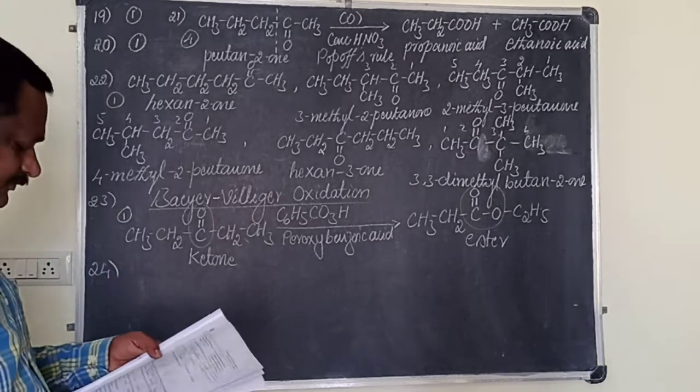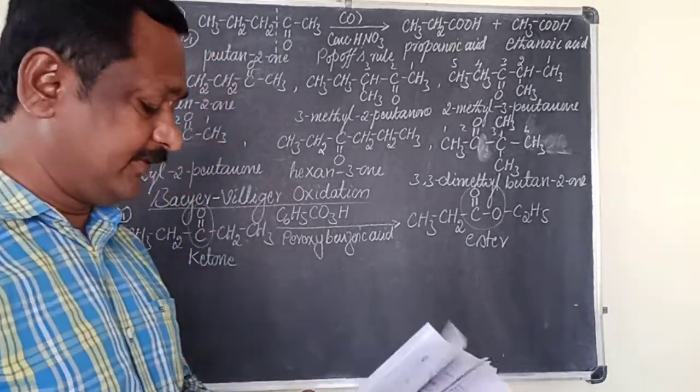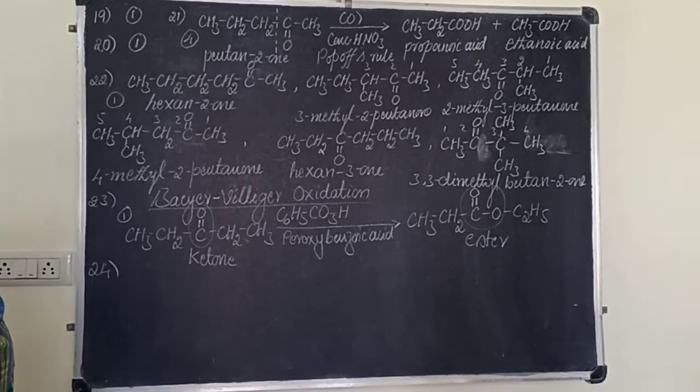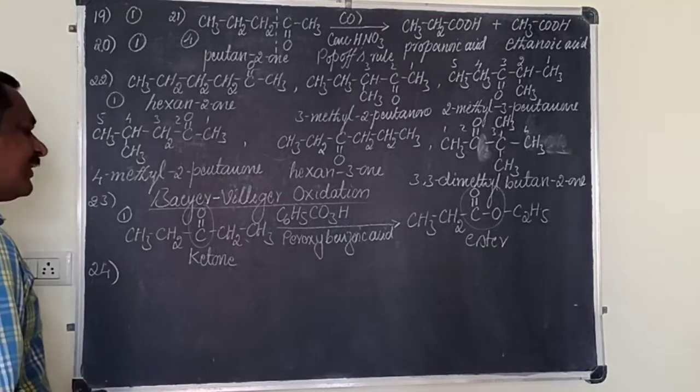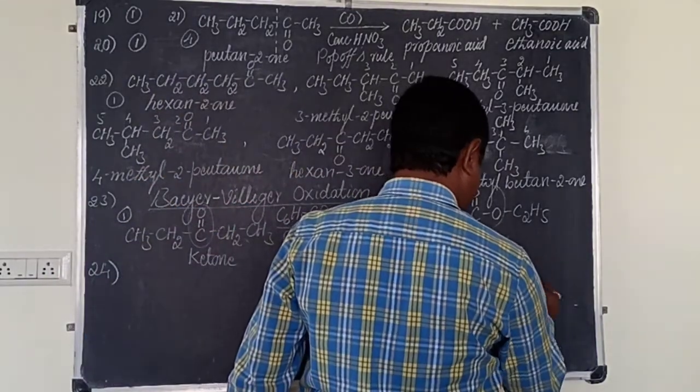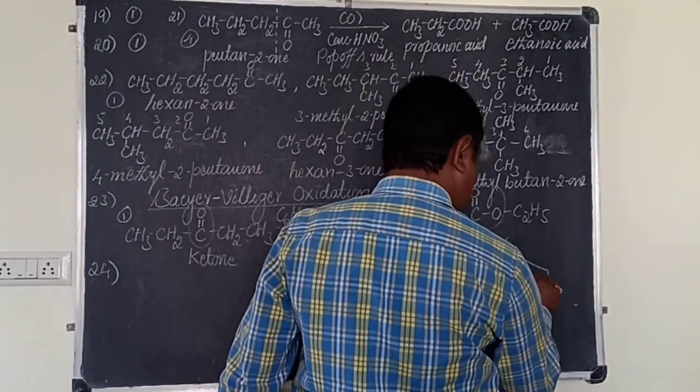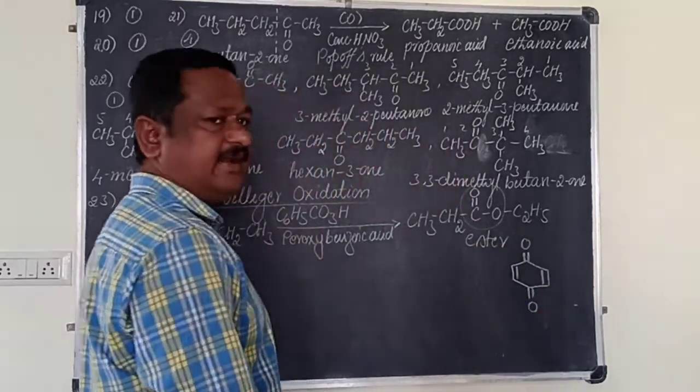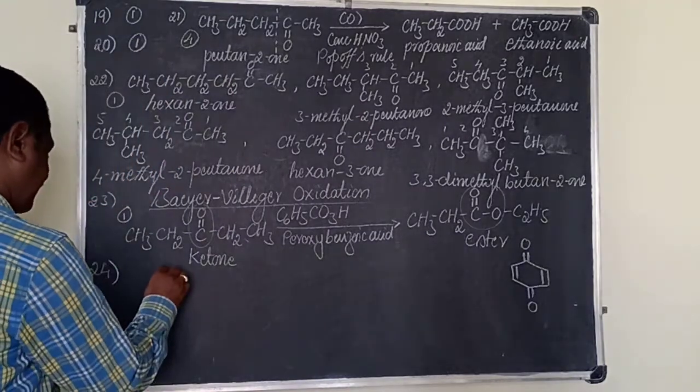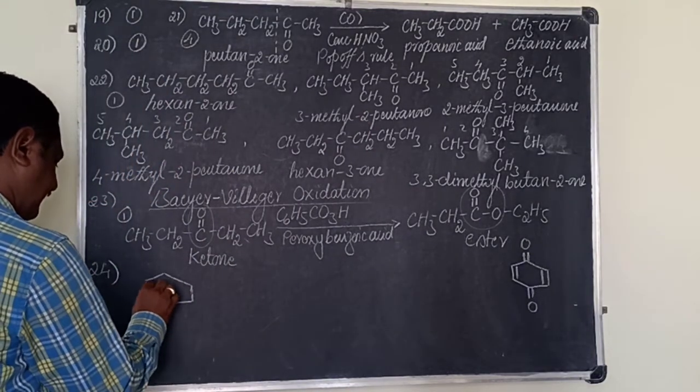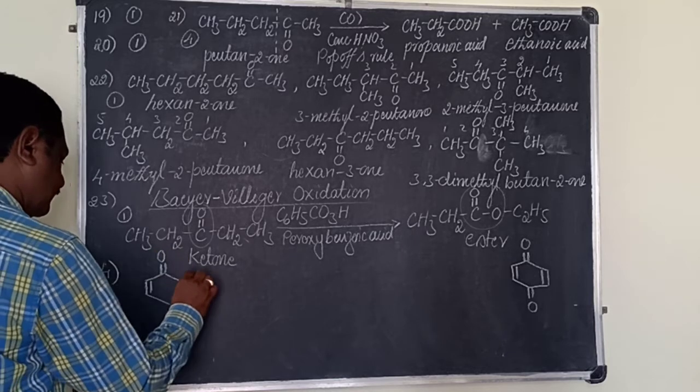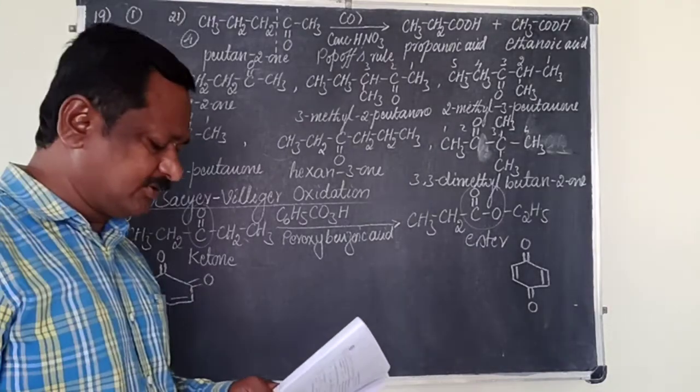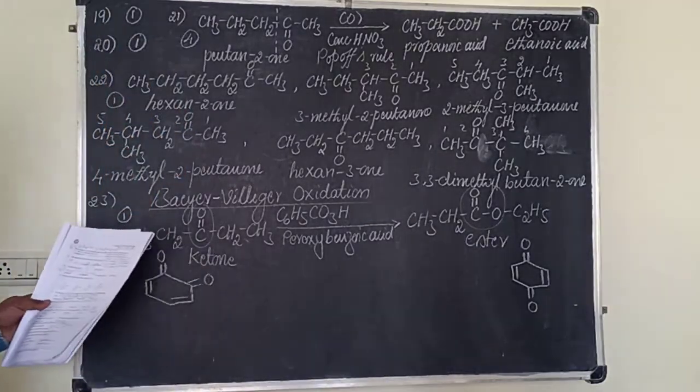Question 24. Which of the following represents orthobenzoquinone? Phenol oxidation with chromic acid forms parabenzoquinone, benzoquinone. Ortho means adjacent carbon atoms with keto groups. Adjacent carbon atoms, this is orthobenzoquinone. The option is 3.